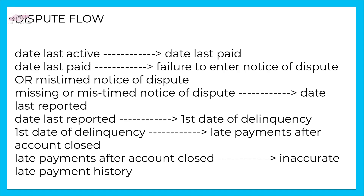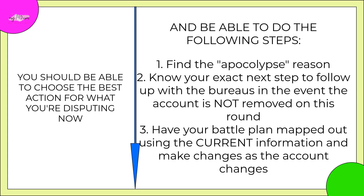Your dispute flow goes literally one thing to the next. As an example, if you use date last active, your next step is date last paid. The next reason could possibly be failure to enter the notice of dispute, or a mis-timed notice of dispute. This shows you exactly what you should be disputing and in what order. You should be able to find the apocalypse reason, know your exact next step to follow up with the bureaus if the account is not removed this round, and have your battle plan mapped out using current information — making changes as the actual account changes.